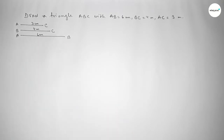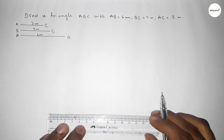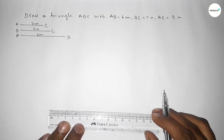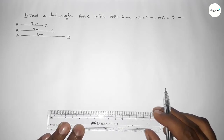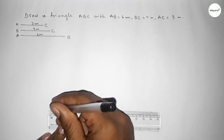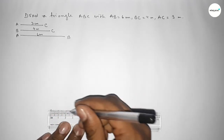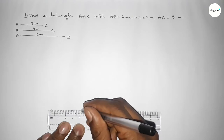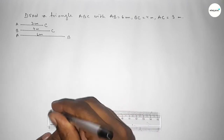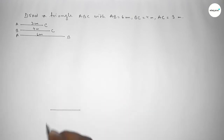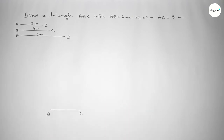Now we draw a line of length 4 centimeter, starting from 0 to 4 centimeter. We take point B at one end and point C at the other end.